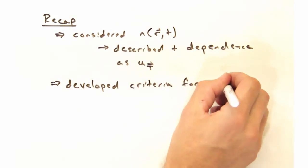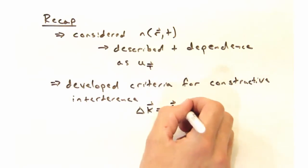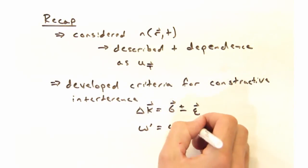When we brought that into our expression for an amplitude, we ended up developing criteria for constructive interference, namely that delta k needs to equal g plus or minus q, and that the final frequency better equal the original frequency plus or minus the frequency of the q vector.